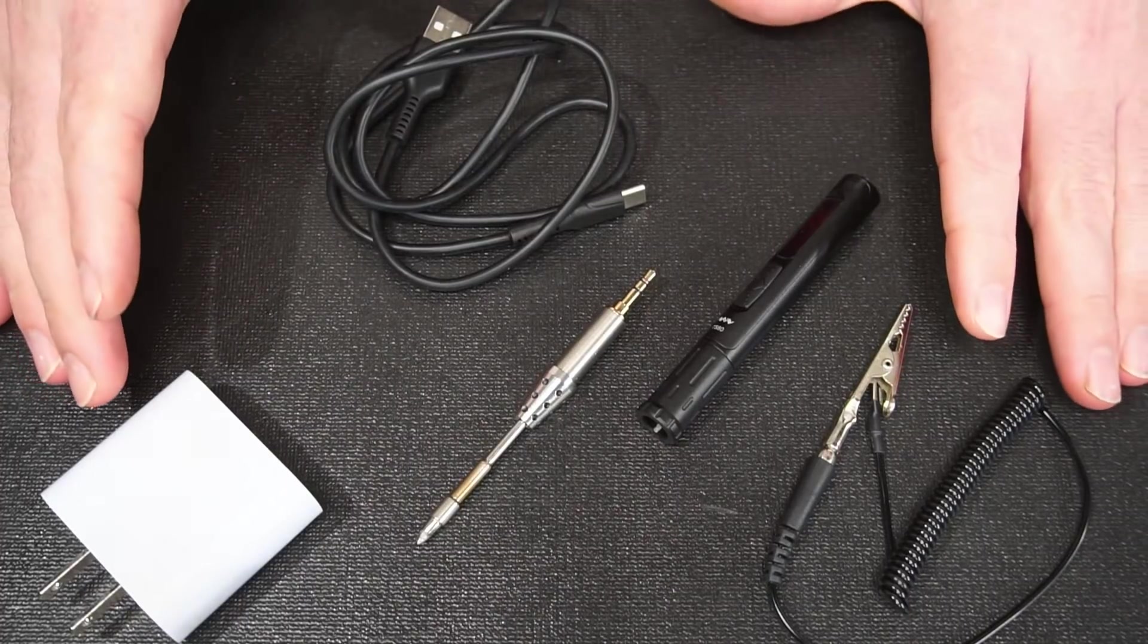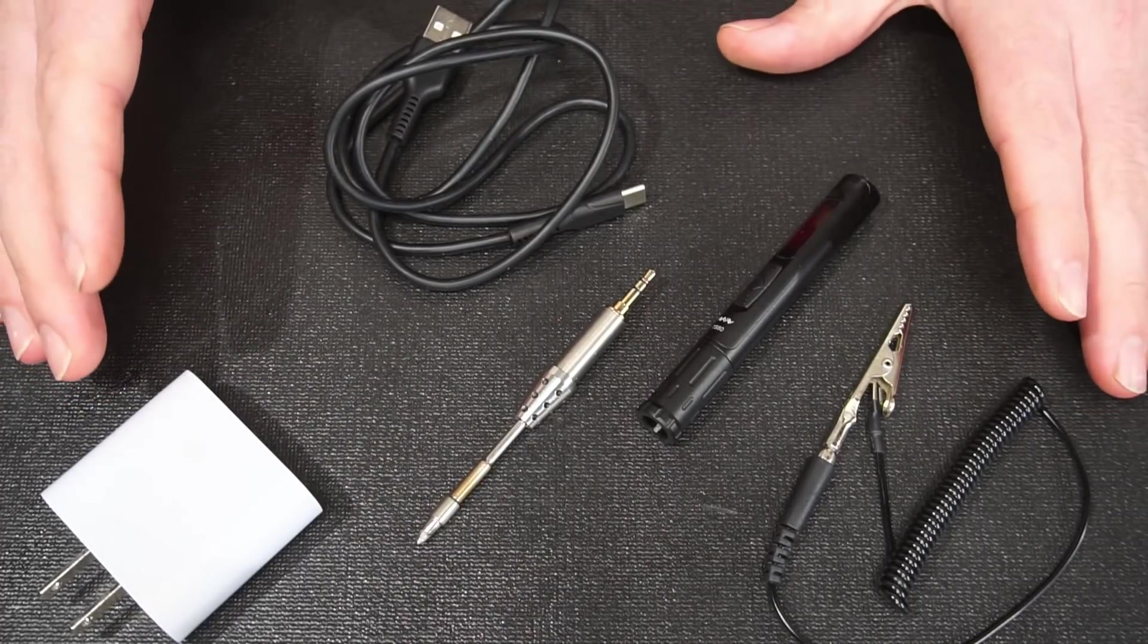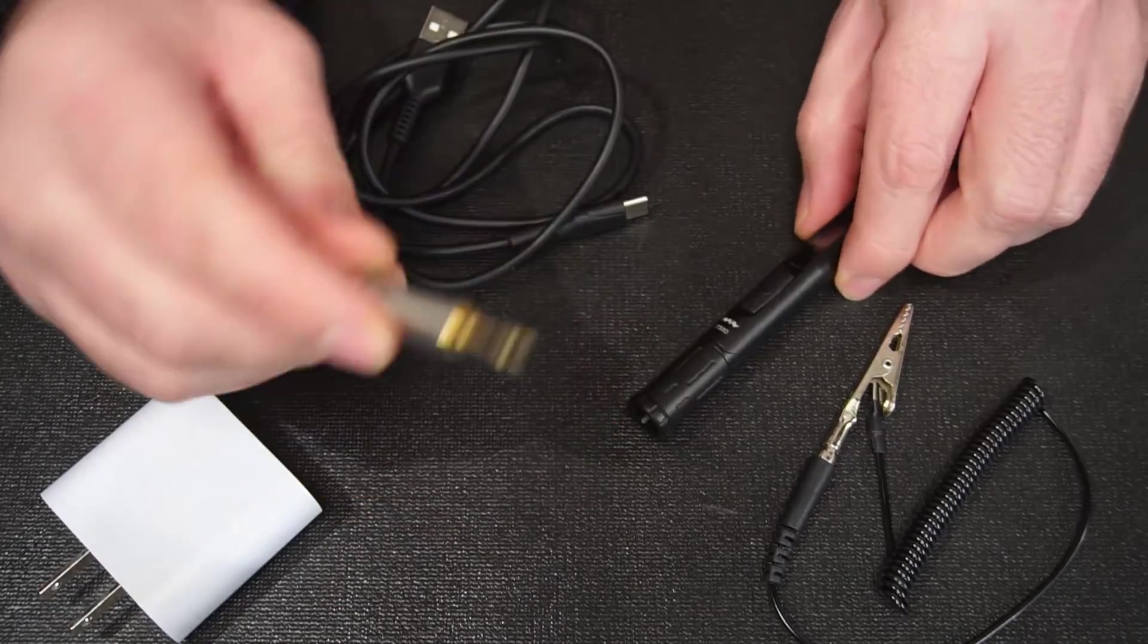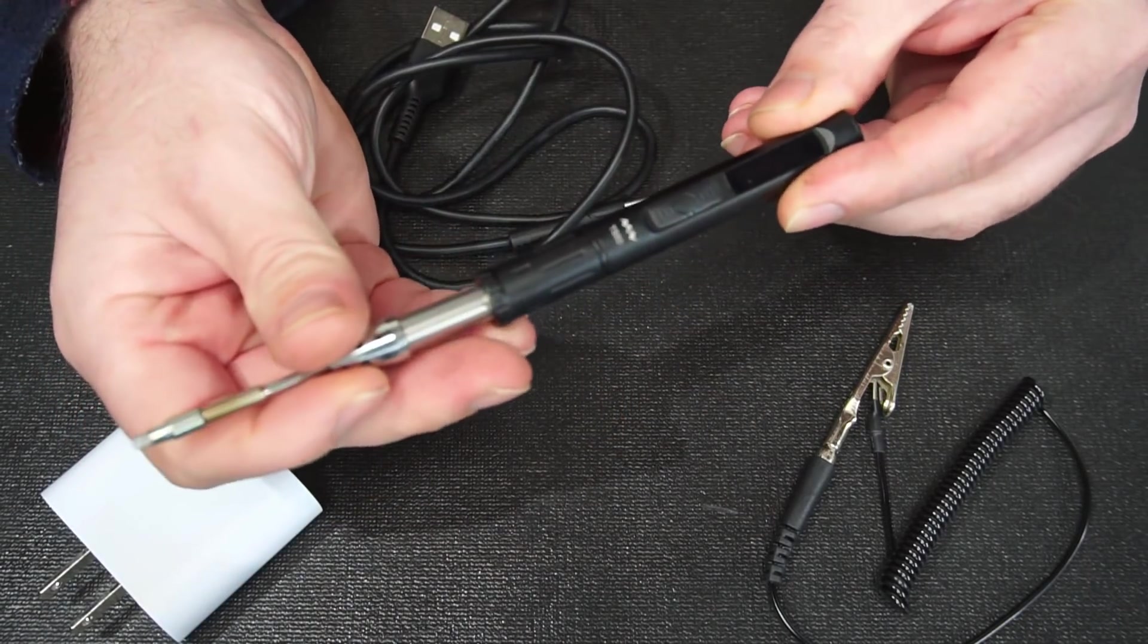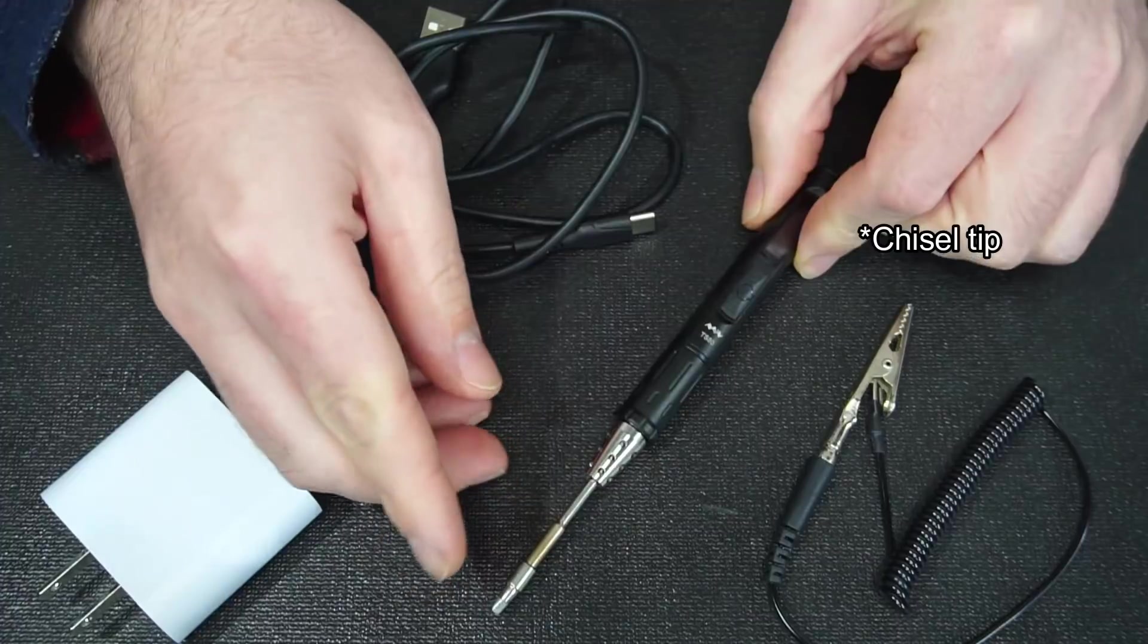There's a couple of purchasing options when you're buying the TS-80. You can just buy a bare-bones kit so you just get the TS-80 iron and wedge style soldering tip.